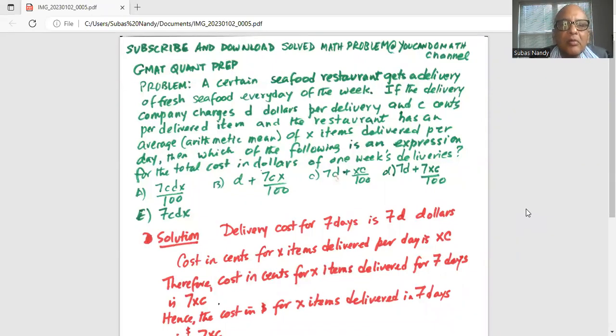The GMAT quant prep problem: A certain seafood restaurant gets a delivery of fresh seafood every day of the week. If the delivery company charges D dollars per delivery and C cents per delivered item, and the restaurant has an average arithmetic mean of X items delivered per day, then which of the following is an expression for the total cost in dollars for one week's deliveries? There are five options for the answers.